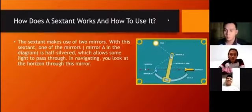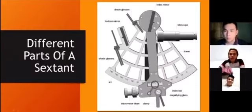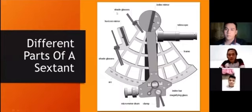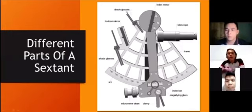These are the different parts of a sextant. First is the index mirror. Next are shade glasses, which are used depending on the intensity of the sunlight coming through your sextant. That's also a way to protect your eyes. Next is the horizon mirror, and still more shade glasses to protect your eyes.